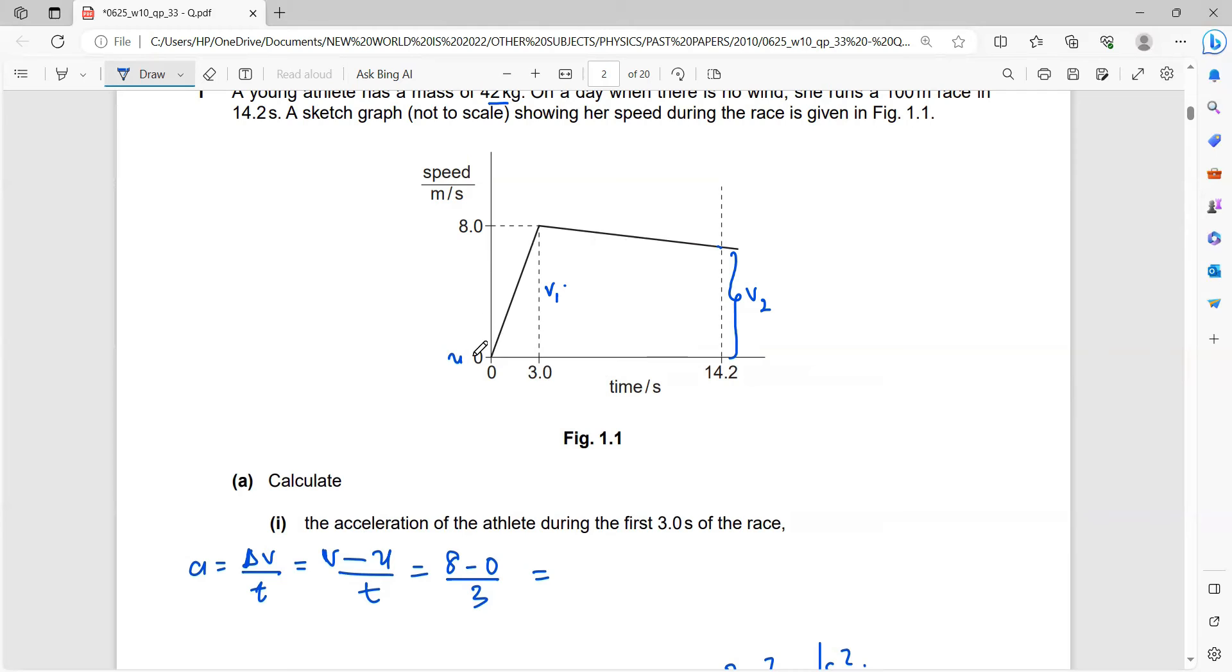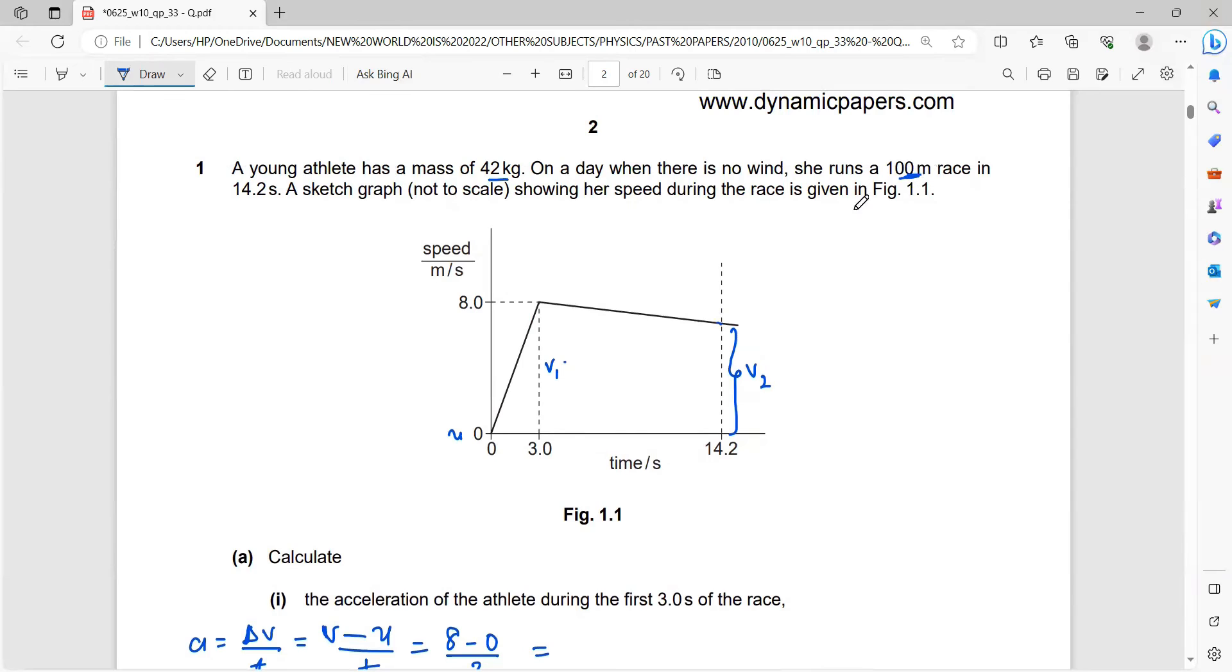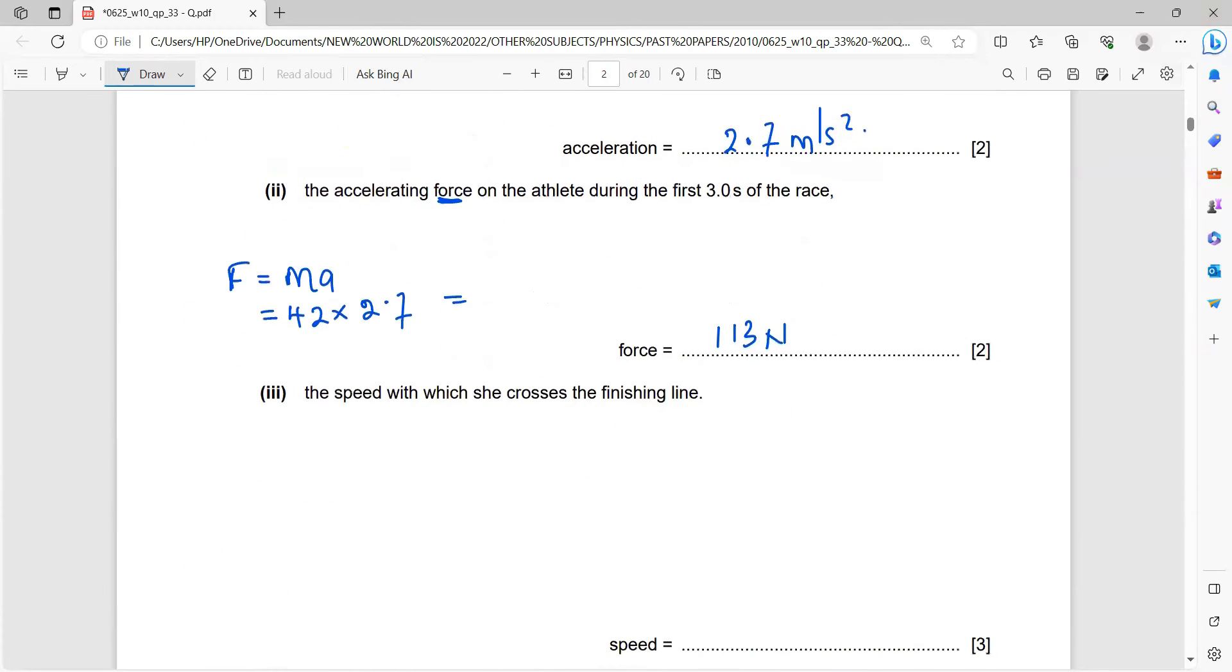Secondly, the area under the graph is the total distance, which is your 100 meters. So take note on that. You can call this a portion A of your graph, and this is portion B. So that's what we're going to use now. For your S, that's the total distance, which is your A plus your B should be equal to 100 meters. So this implies that what is your A? Your half base times height plus half, sum of parallel sides, V1 plus V2, and your height should be equal to 100.